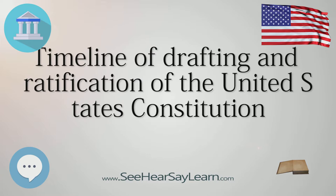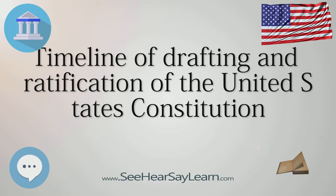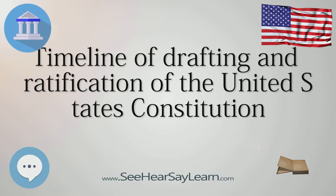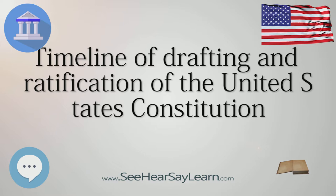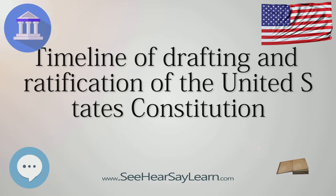June 21: Having been ratified by nine of the thirteen states, the Constitution is officially established. June 25: Virginia becomes the tenth state to ratify the Constitution, 89-79. In addition to ratifying the Constitution, Virginia requests that twenty alterations be made to it.